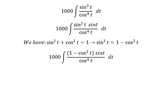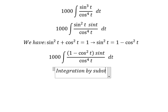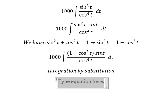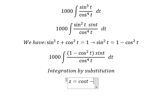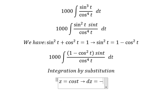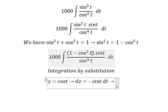We can use integration by substitution. I will let z = cos(t). Taking the derivative of both sides, we get dz = -sin(t) dt. Because we don't have a negative sign here, I will move the negative to the left side.